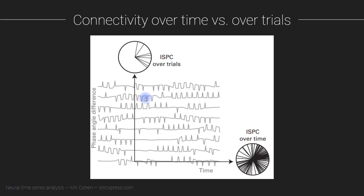Here was the figure you saw before. Now you can interpret what these lines are. This is time. Each of these rows corresponds to a trial, and what you're looking at are the phase angle differences between two electrodes. This is the phase angle difference time series, in radians — the y-axis here is in radians.